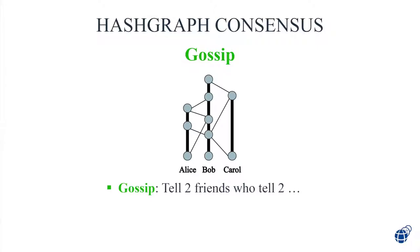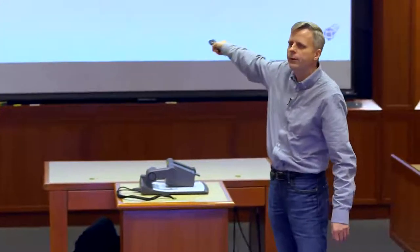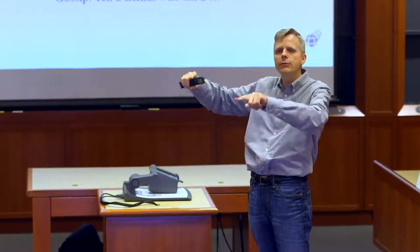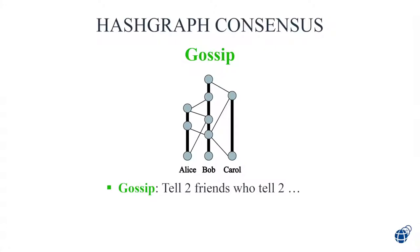Each circle above represents an event of somebody gossiping to someone else. Look at the top circle in the whole thing — that's the last event in this diagram, in the Bob column, with a line going down to a circle in the Carol column. That top circle represents the event where Carol called Bob and told him everything she knows. This diagram shows the whole history. If you look at it, you can see how we talk to each other and in what order. You can follow the lines to see how information flowed through the network.